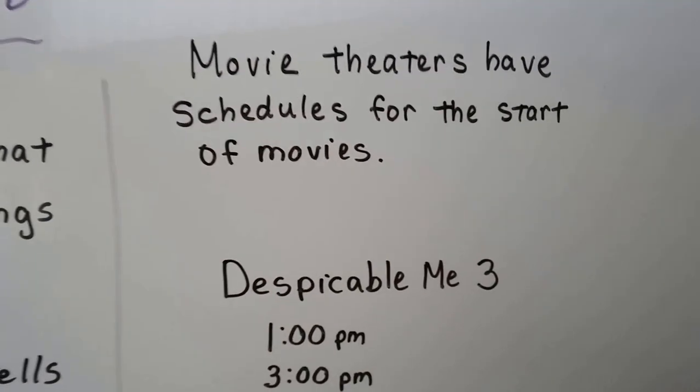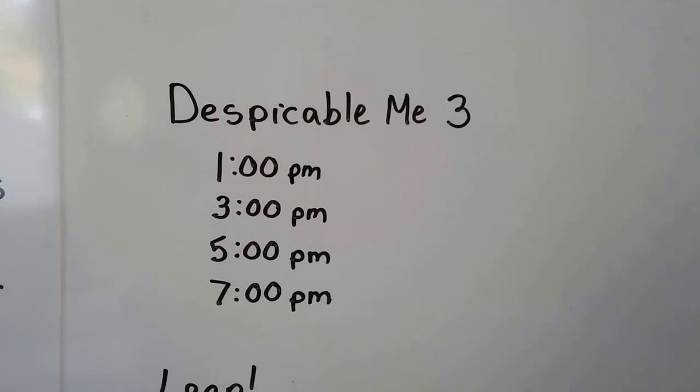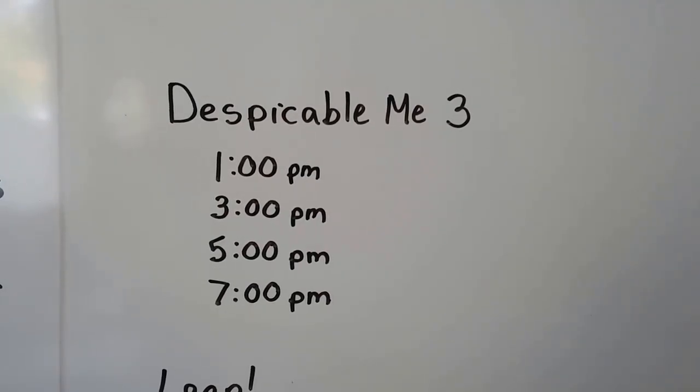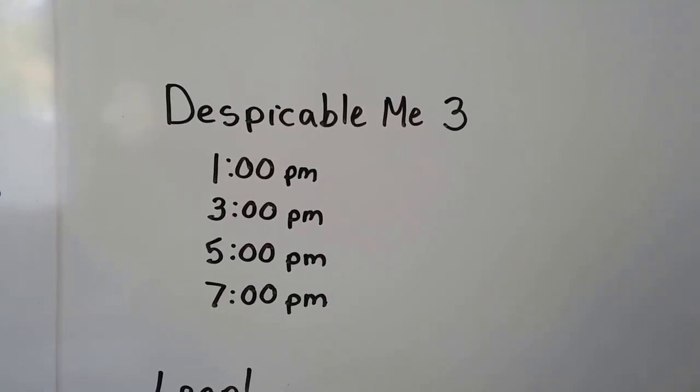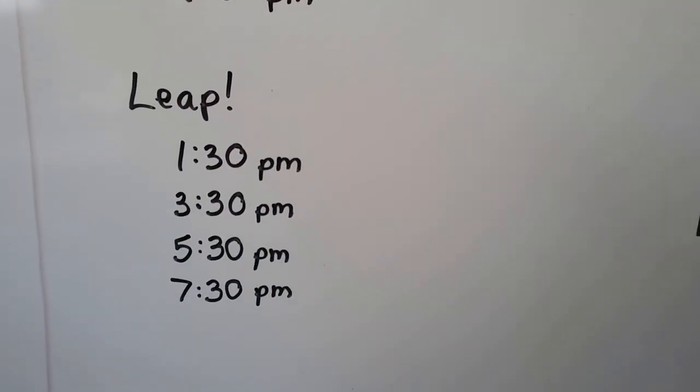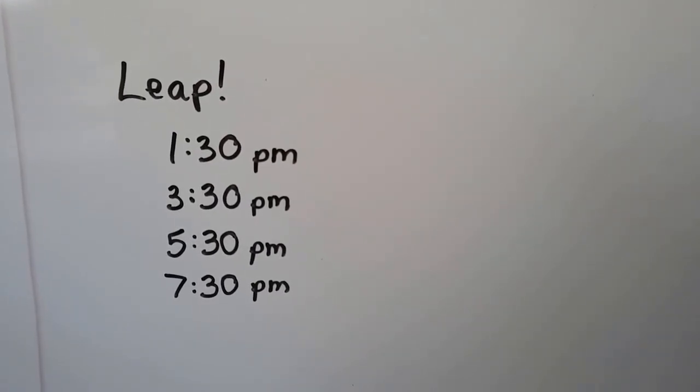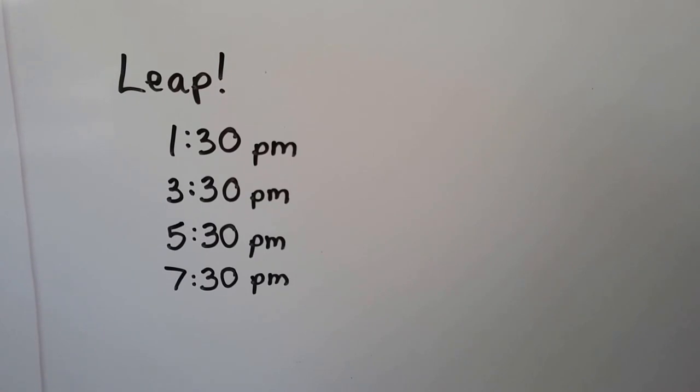And movie theaters have schedules for the start of movies. Despicable Me, their showing times are 1 o'clock p.m., that means it's going to be 1 in the afternoon, 3 o'clock, 5 o'clock, 7 o'clock. And the movie Leap is going to be aired at 1:30 p.m., so that's 1:30 in the afternoon, 3:30, 5:30, 7:30.